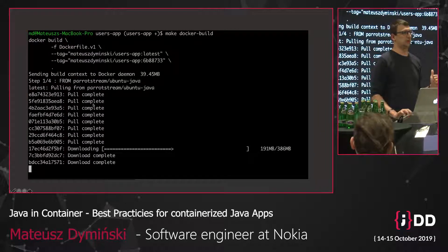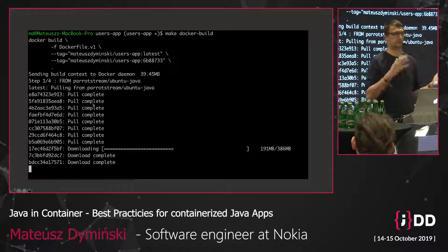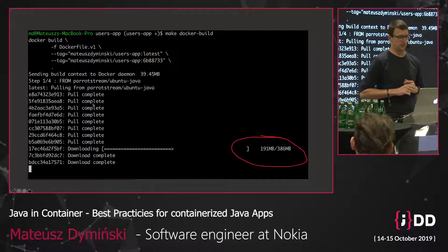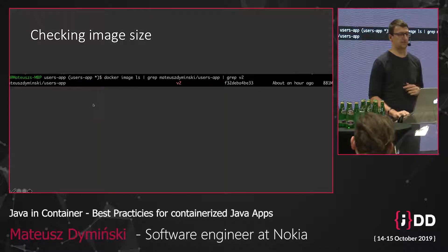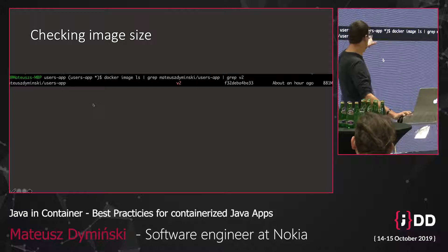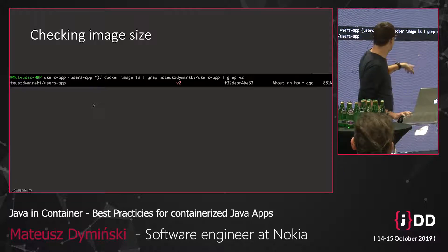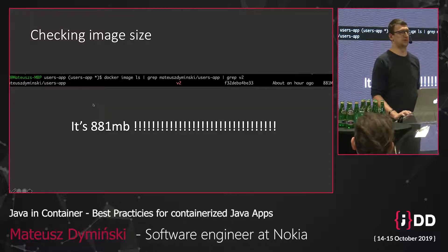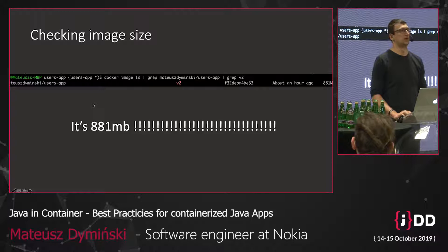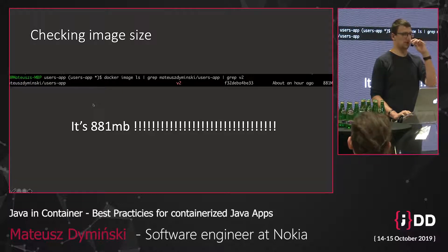The final version of our Dockerfile uses the exec array form — passing Java, extra flags for native memory tracking, and then the jar. Everything is in an array. But when we were downloading that image we Googled earlier, I noticed that a single layer was almost 400 MB. I typed docker images to check the size and it turned out to be 881 MB. If you choose a random image from the internet, you might end up with a Docker image that's almost a gigabyte in size.